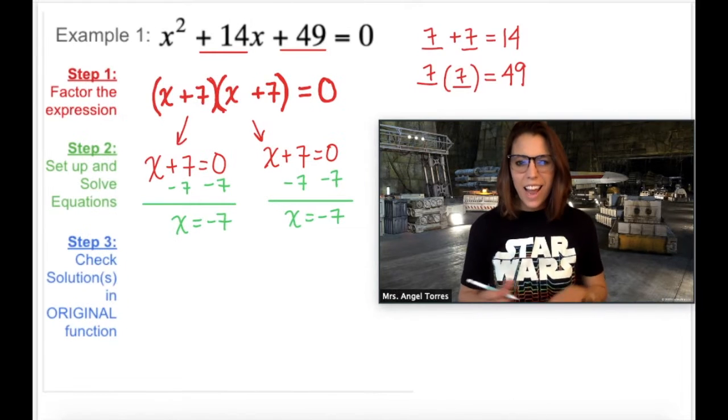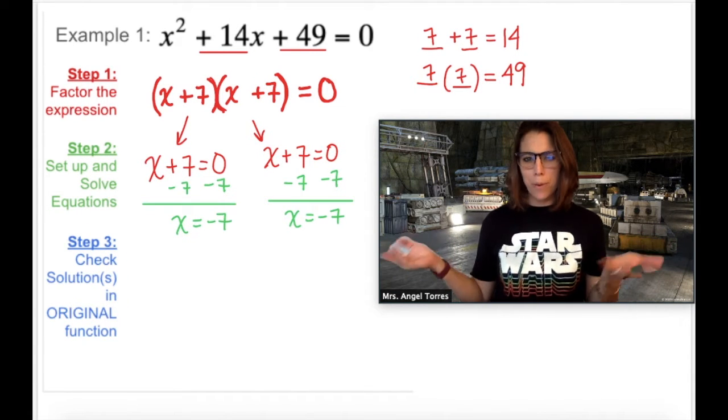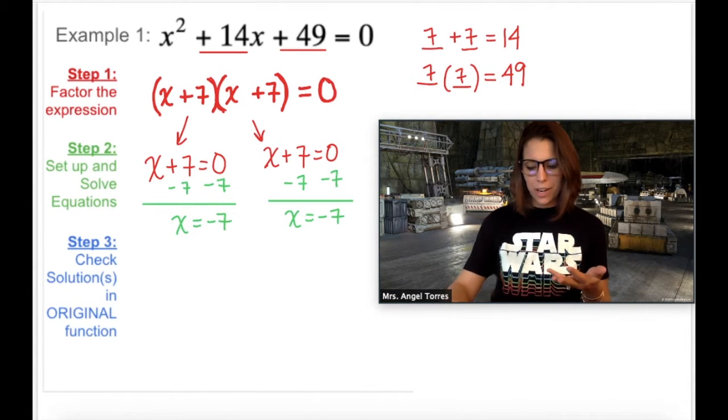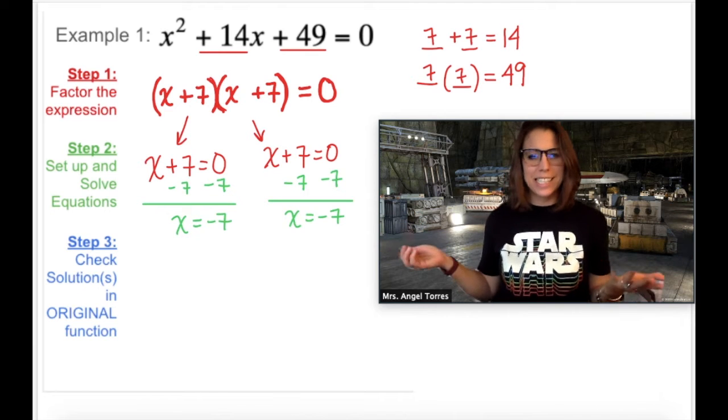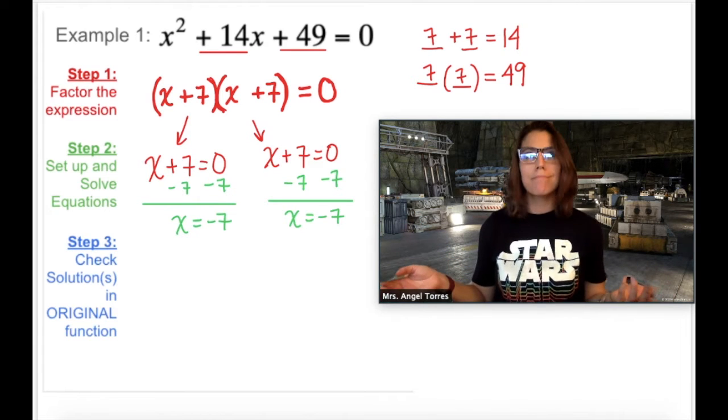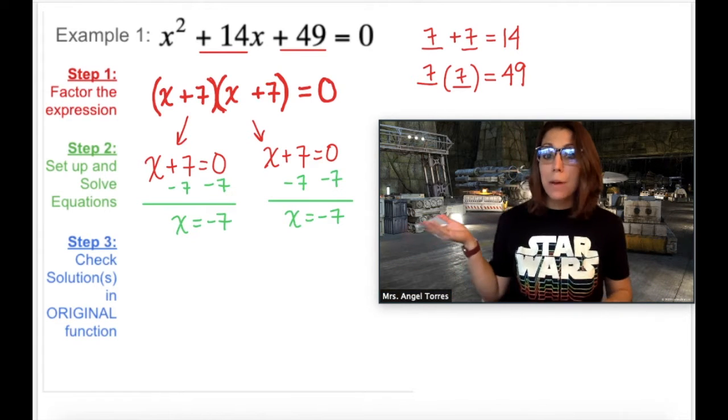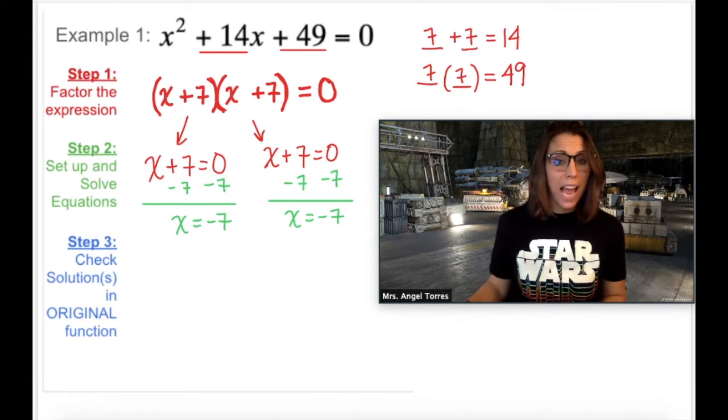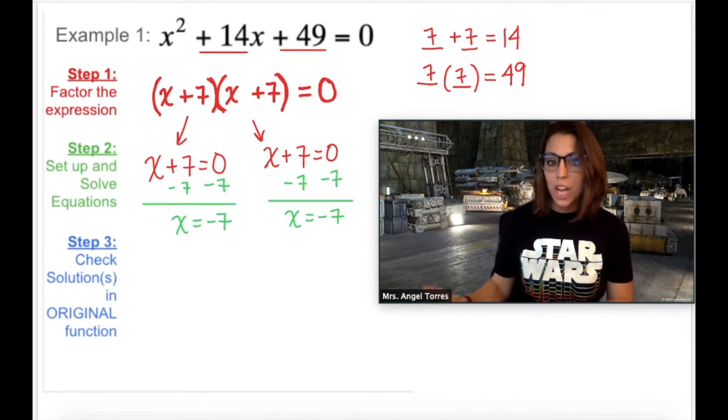Wait a minute. I ended up with negative 7 for both of them? That's weird. Well, when I go to check, since negative 7 is the same number, would I check it twice? No. That just means that at most, this quadratic can only have one solution.